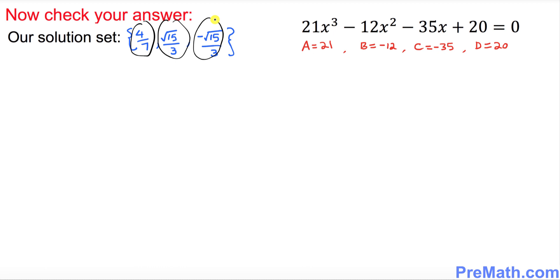Now to check our answer, I want you to add all these three solutions up. I want you to put down 4 over 7 plus square root of 15 over 3 plus negative square root of 15 over 3, and ask yourself is it equal to minus b over a, where minus b over a...